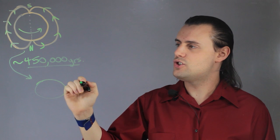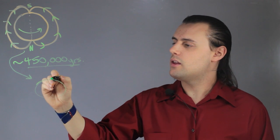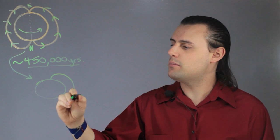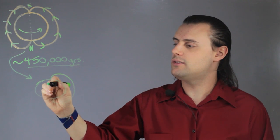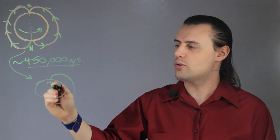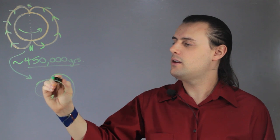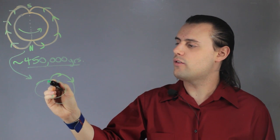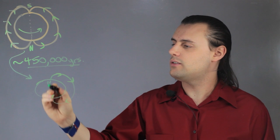after the next geomagnetic reversal, the north magnetic field will actually be in the same location as the north geographic or geodetic pole. And so the Earth's magnetic field will flow from the north pole to the south pole.